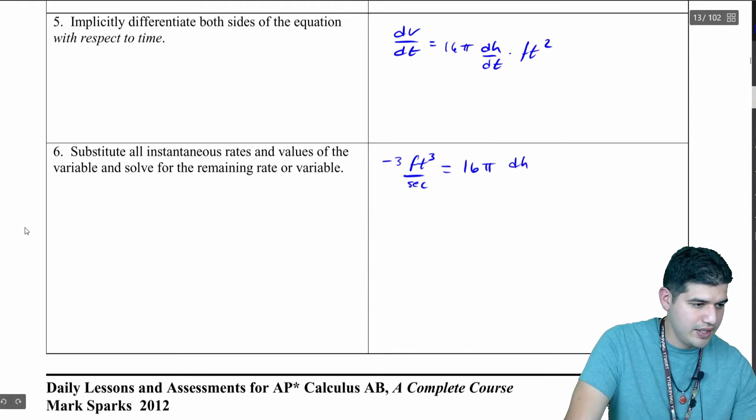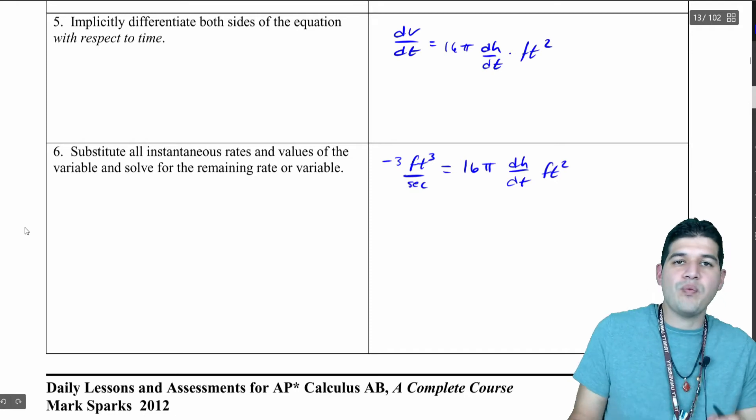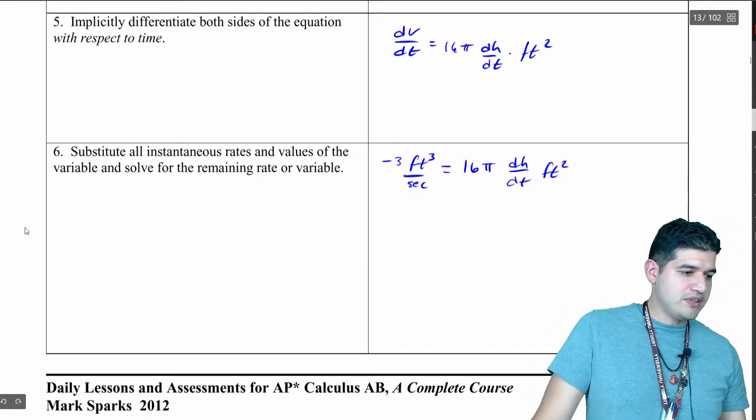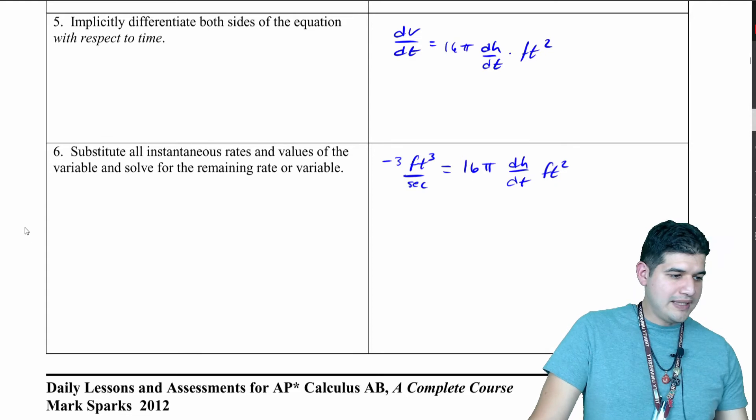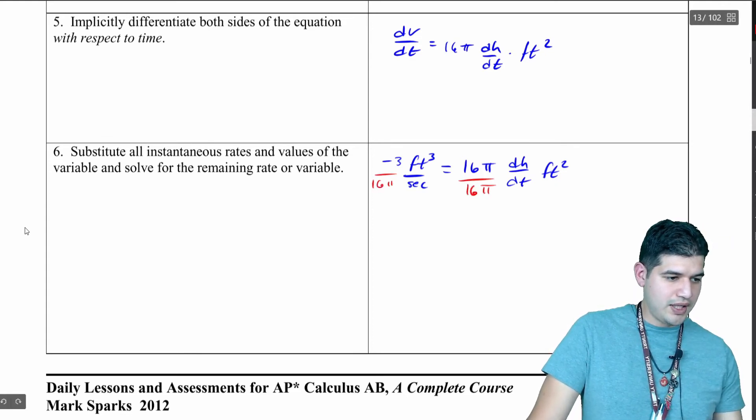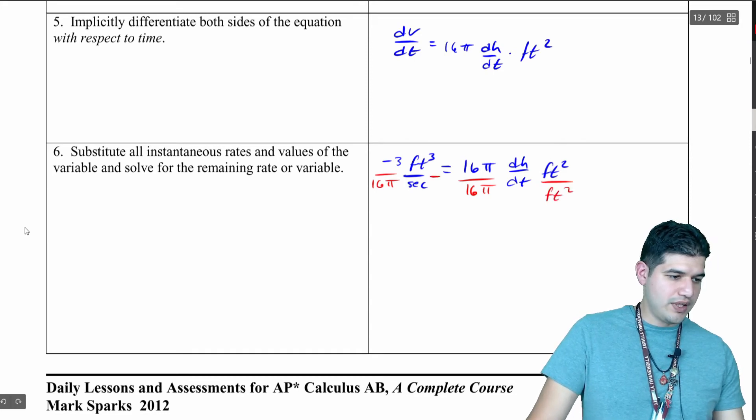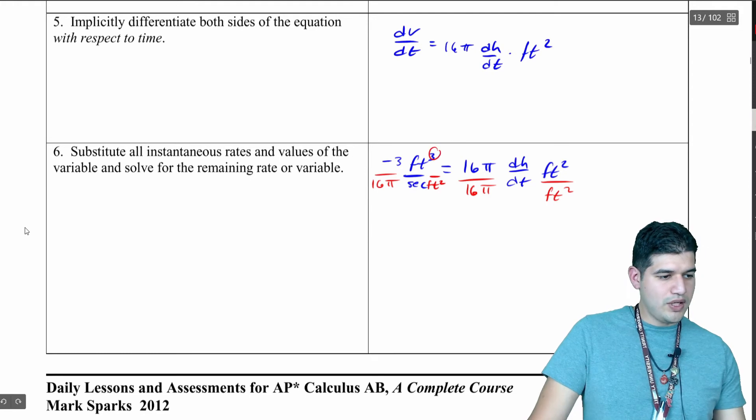So I'm going to leave that right there, dh/dt, and then feet squared. We want to isolate dh/dt, so I'm going to divide by 16π on both sides, and I'm also going to divide by square feet because I want to do that analysis on the cubic and the square feet.